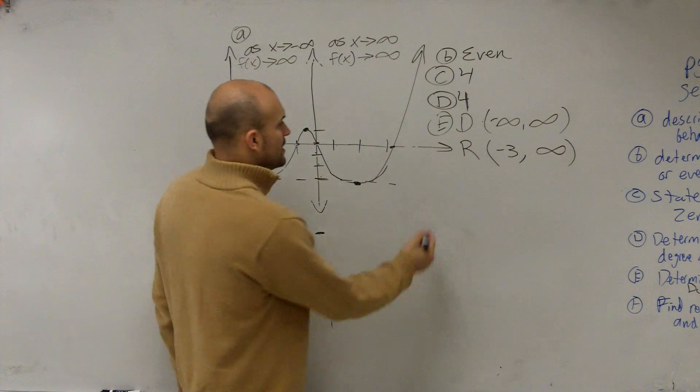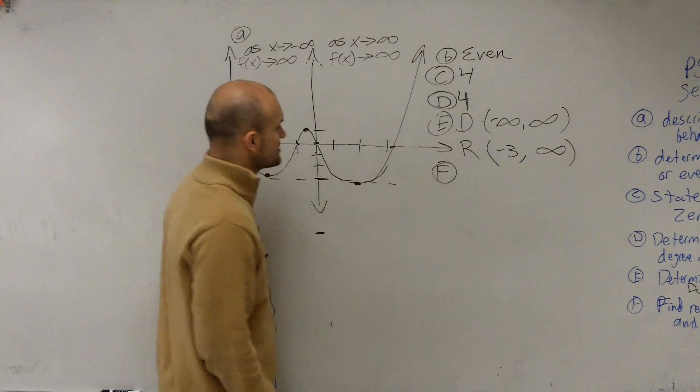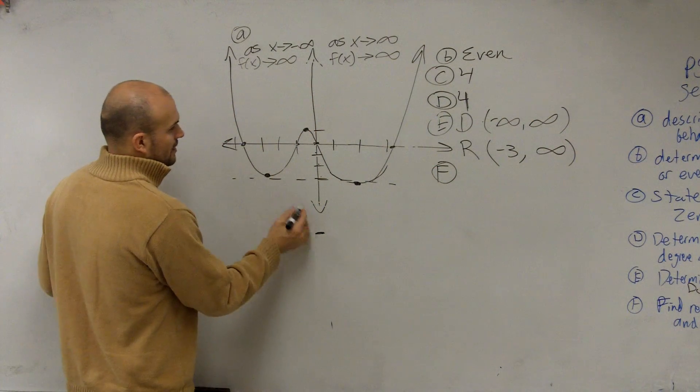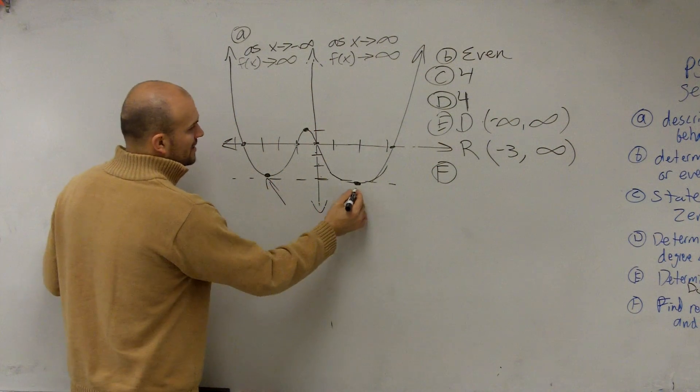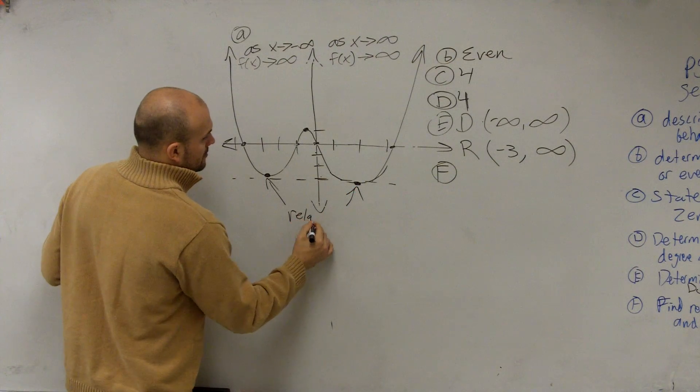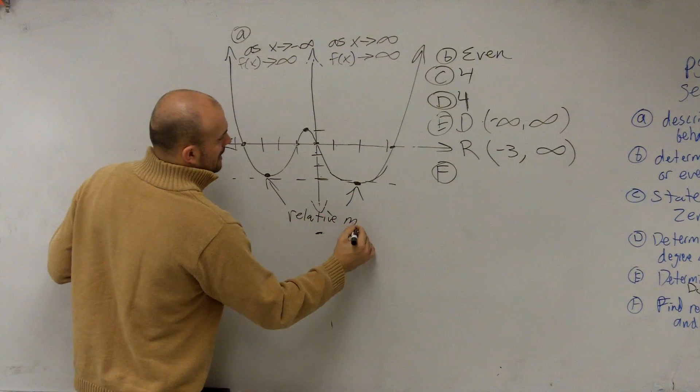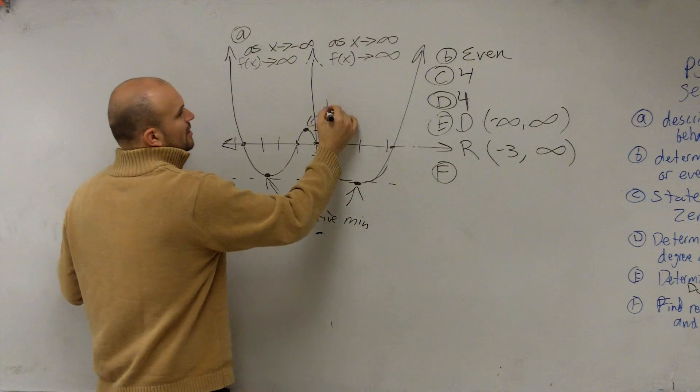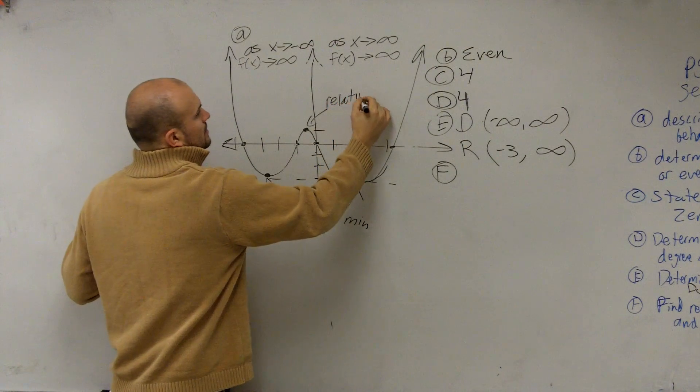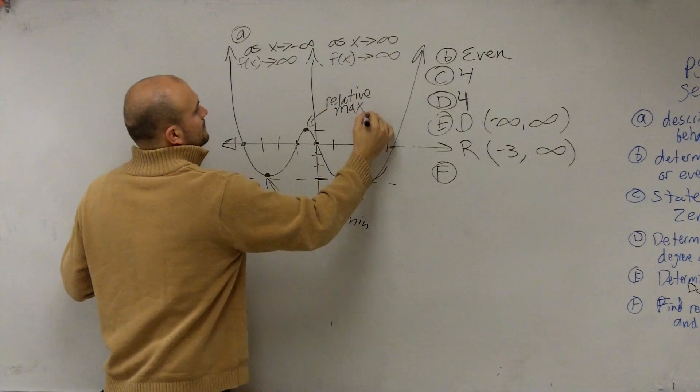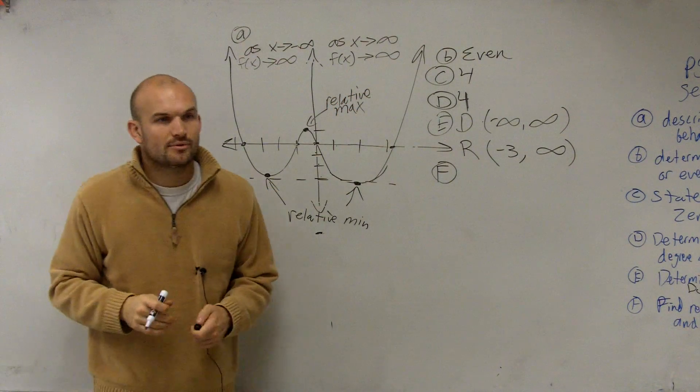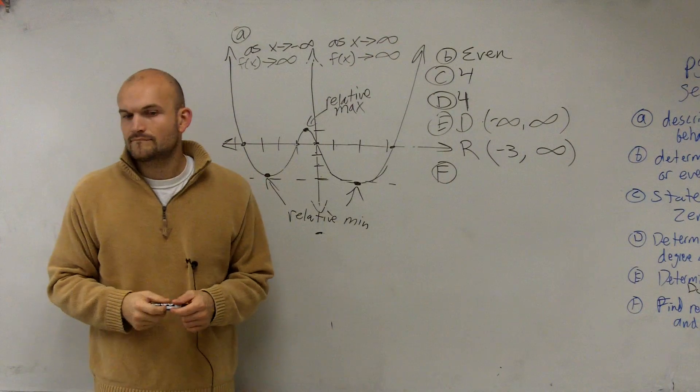And then the last one is find my relative min and max. Well, remember our relative min and max. Here's going to be your relative min and here's going to be my relative max, which are going to be my turning points. All right? There you go.